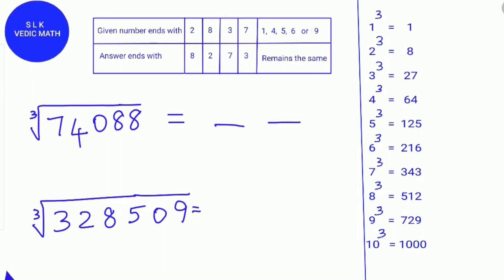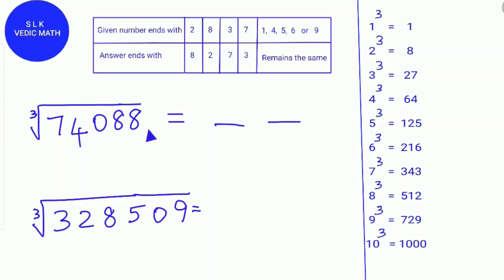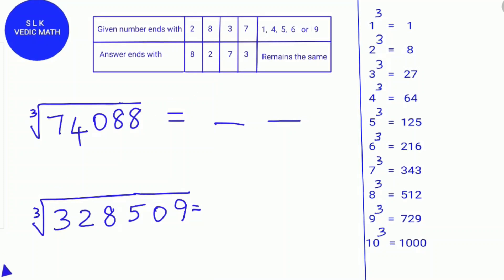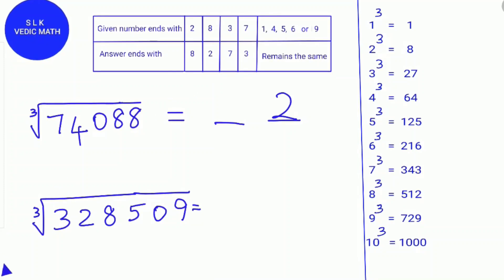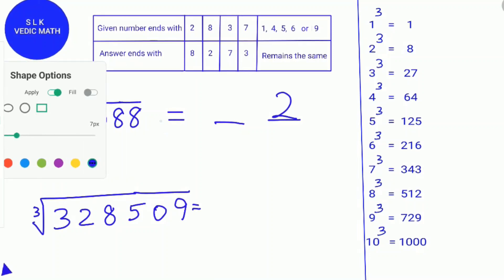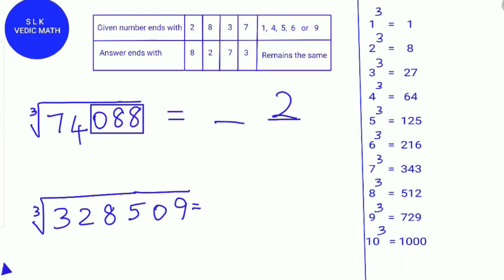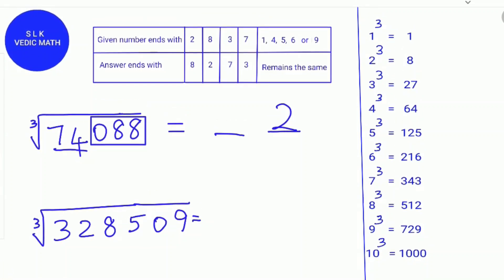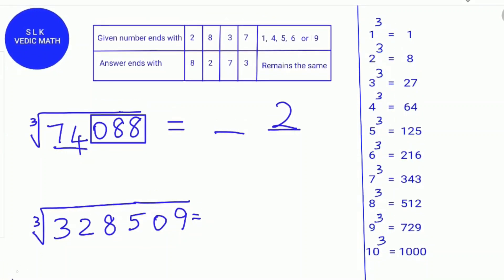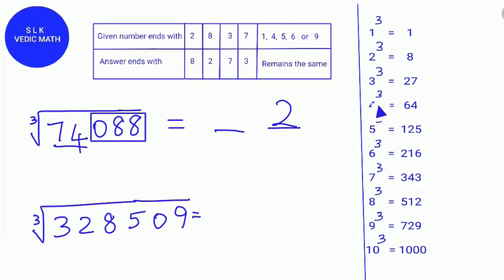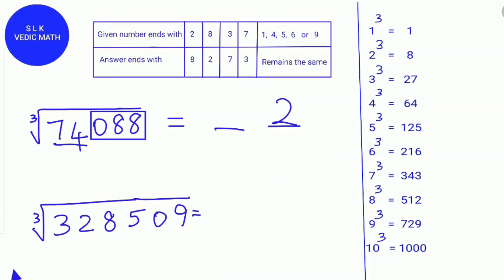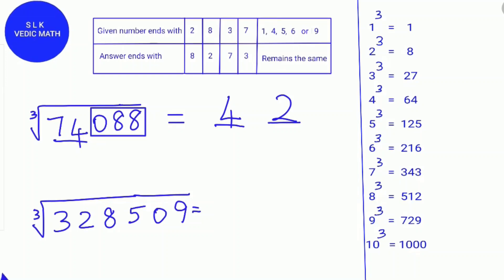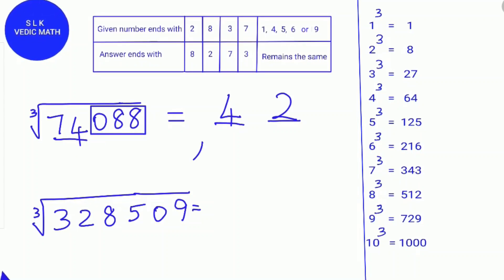74,088 ends with 8, so we find 8 on the table — the answer will end in 2, so we write 2. Next, box the last 3 digits (0, 8, 8). The remaining digits are 7 and 4, which we consider as 74. We find where 74 is in the cube table: 74 is between 4 cubed and 5 cubed, so we take 4. Therefore, the cube root of 74,088 is 42.